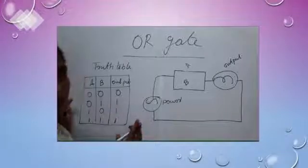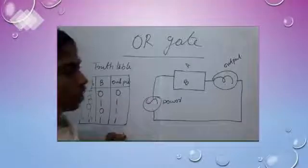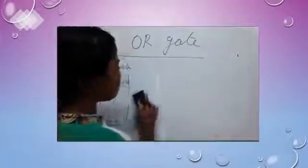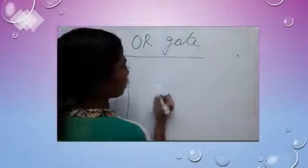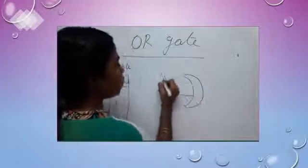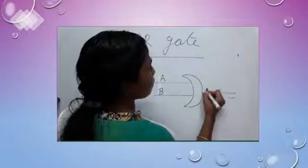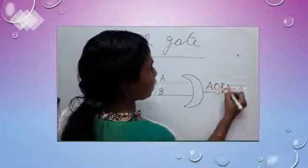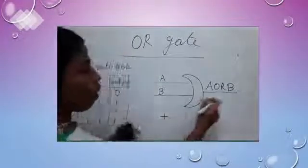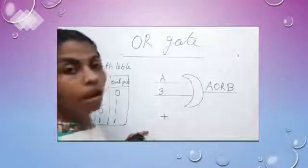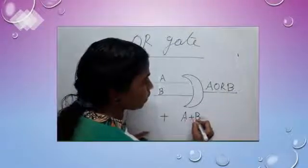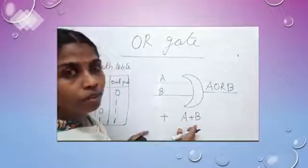This is the truth table of OR gate. Next, I will explain how we represent this OR gate. We represent the OR gate by using this diagram. This is the OR gate with 2 inputs and 1 output. Here we use plus as an operator for representing OR gate — instead of writing A or B, we can write A plus B.